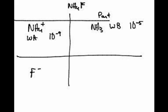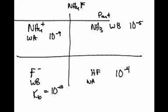The exponents are going to add up to minus 14, 9 plus 5 is 14. Fluoride's partner is HF. HF is a weak acid, Ka is 7.2 times 10 to the negative 4. So fluoride is a weak base and his Kb would be about 10 to the minus 10.